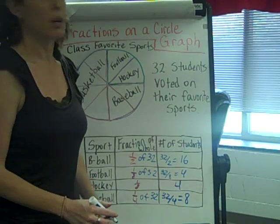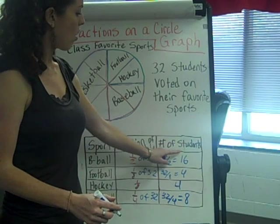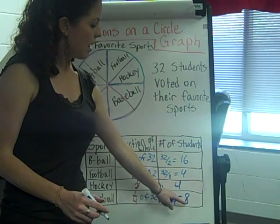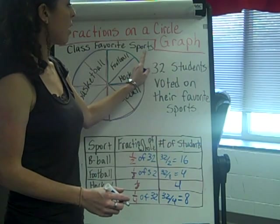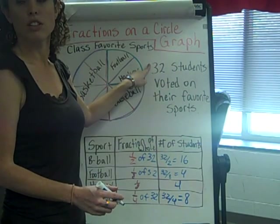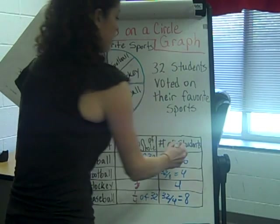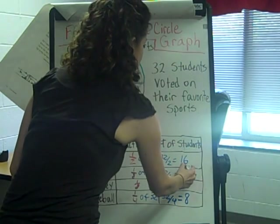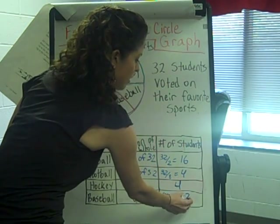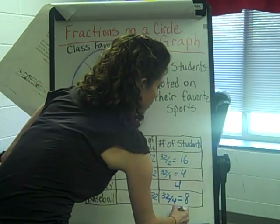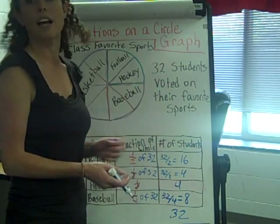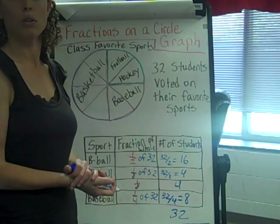To double-check my work, I can add all of my student answers up. If I get the total of thirty-two students that voted, then I'll know I'm correct. Four plus four is eight, eight plus eight is sixteen, sixteen plus sixteen is thirty-two. I know I got the correct total.